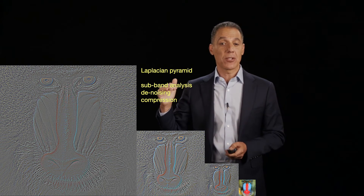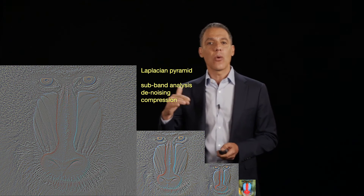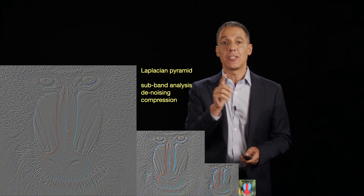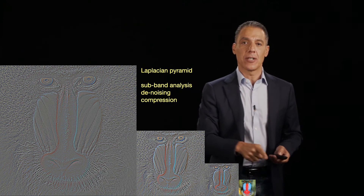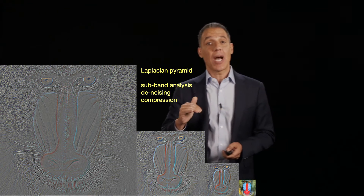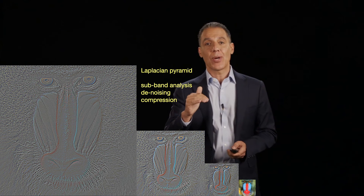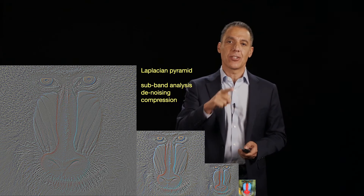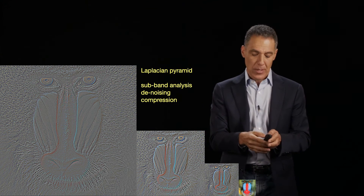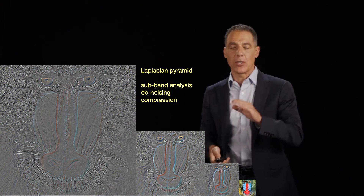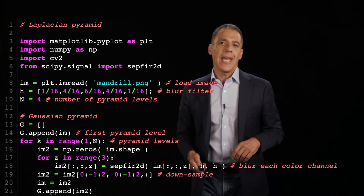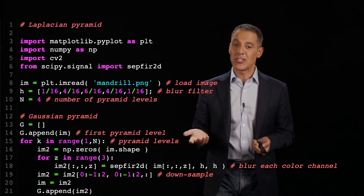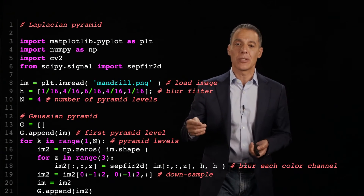This is very popular in denoising — removing noise from an image — because noise manifests itself differently across the spectrum. It's also very popular in compression. Wavelets, for example, have been very popular in compression, and this is a variant of a wavelet transform, which we won't be talking about in this class. I think it's important to write the code for this, and these calculations are actually pretty simple.